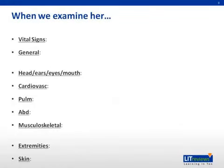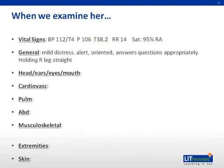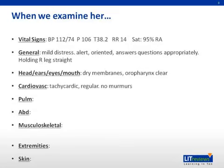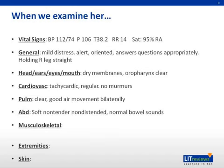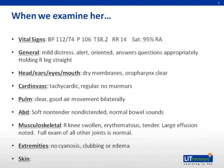Let's examine the patient. Her vital signs show she is normotensive but tachycardic with a pulse of 106, and febrile with a temperature of 38.2. In general, she is mildly distressed but cooperative. Throughout the exam she is holding her right leg straight. Her mucus membranes are dry and she is tachycardic, but her rate and rhythm are regular. Her lungs are clear and her abdomen is benign. Her right knee is visibly swollen, red, and quite tender to the touch, with a large effusion. Compared to the left knee, findings are not symmetric. All other joints are normal. She has no cyanosis, clubbing, or edema, and a thorough skin exam reveals no rashes.